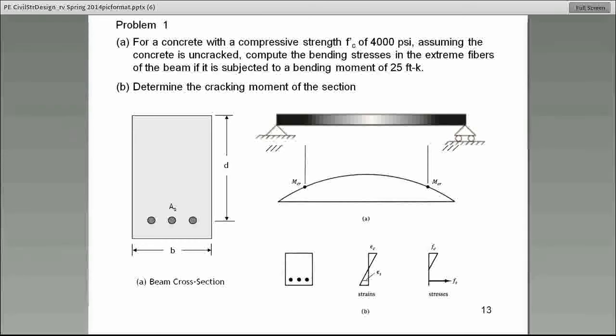Now, I want everyone to get involved in calculating the answer to this problem. Just imagine this is the day of the test, and let's see how we can do. It says, for a concrete with a compressive strength of 4,000 PSI. So, F prime C, this concrete has been designed to reach 4,000 PSI in 28 days.